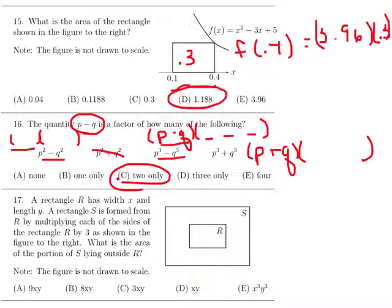The rectangle. Rectangle S is formed from R by multiplying each of the sides of the rectangle R by 3. What is the area of the portion of S lying outside R? So R has a width x and a length y. I think I'd rather make this y and this x. So S is formed by multiplying each of the sides by 3. So this is 3x, this is 3y.